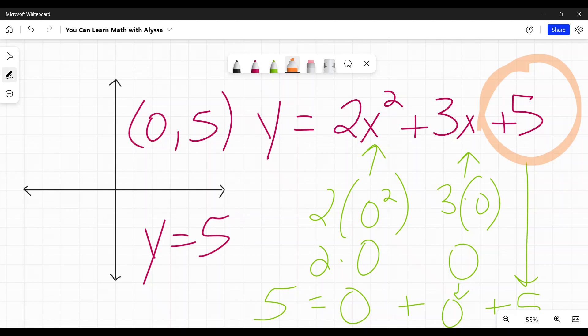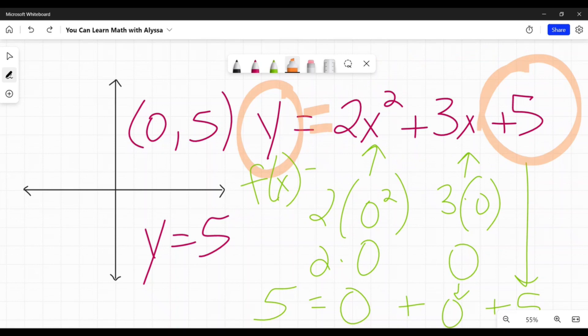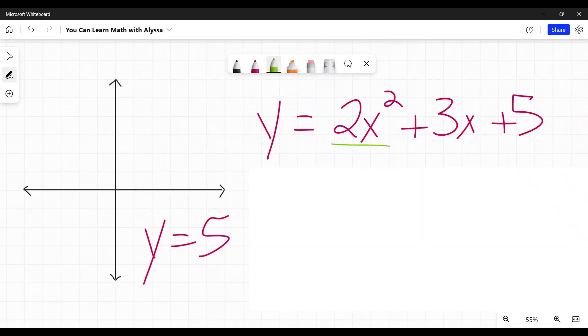Now, a couple little caveats here to remember. This only works if it is in the form y equals or f of x equals. Everything has to be on that right side. Secondary caveat. We are talking about these basic parabolas, cubics, x to the fourths, x to the fifths. These polynomials where you have things written in descending order.